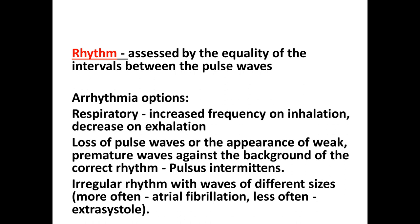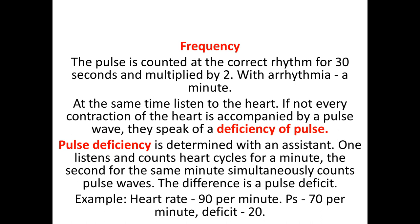Sometimes there may be loss of pulse waves, or the appearance of a weak premature wave against the background of correct rhythm — this is called pulsus intermittens. There can also be irregular rhythm with waves of different sizes, for example in atrial fibrillation or in any kind of extrasystole.